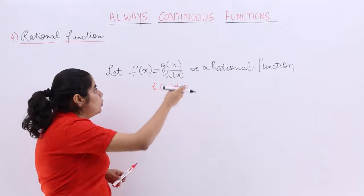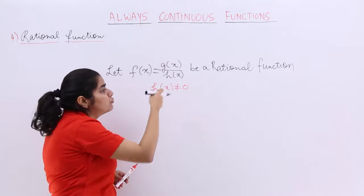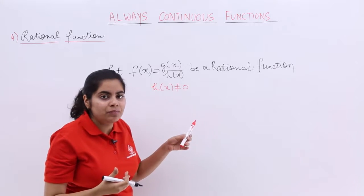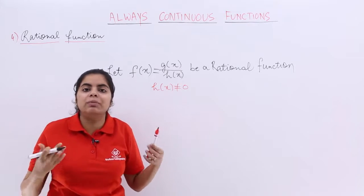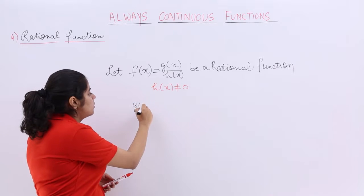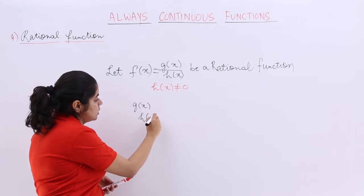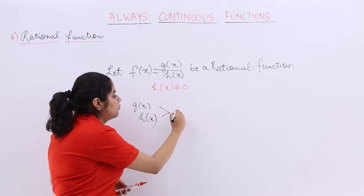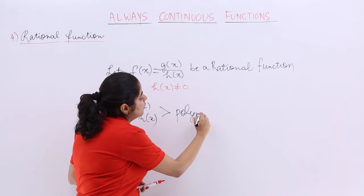Now, in a rational function, what will be g(x)? And what type of function will be h(x)? Both g(x) and h(x)—both of these will be what type of functions? They will be polynomial functions.